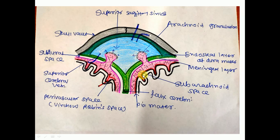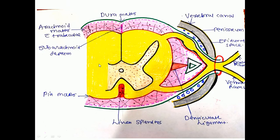There is definitely a space between the pia mater and the cerebral cortex or neurological tissue, but practically it is not identifiable; that is known as the subpial space. Now we will see the further extensions of pia mater. Pia mater has four types of extensions or processes.